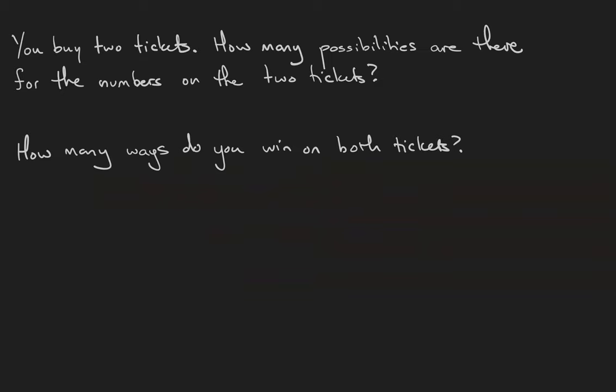Suppose you buy two tickets. How many possibilities are there for the numbers on the two tickets? This question is asking us about any tickets at all. So what we're really doing is we're doing the sample space cross the sample space. The first omega being our first ticket, the second omega being our second ticket, and we know that that's going to be the number of tickets times the number of tickets. So 10 times 10 is 100.